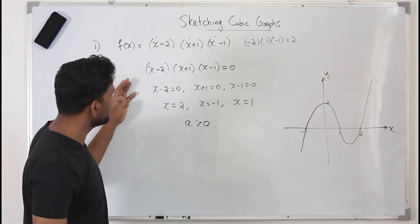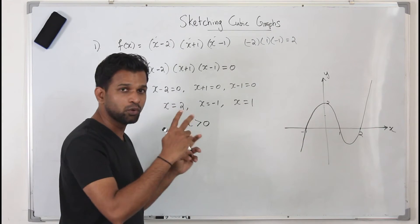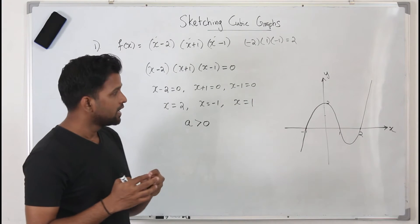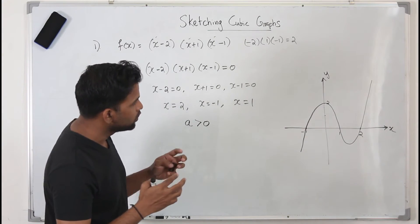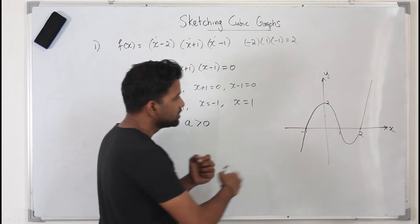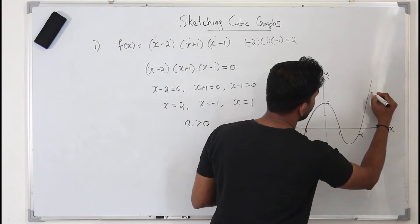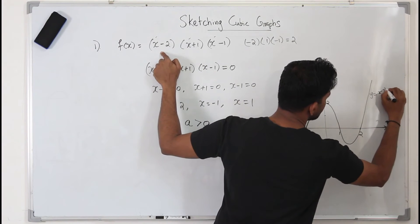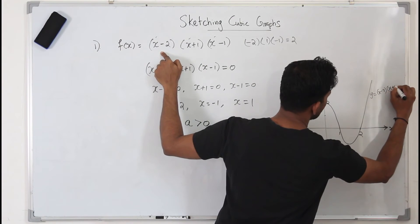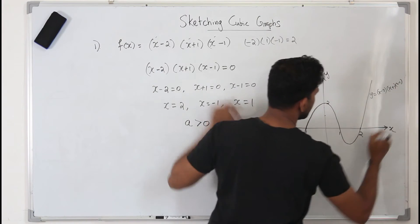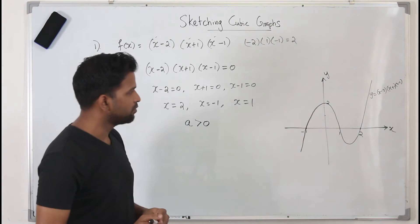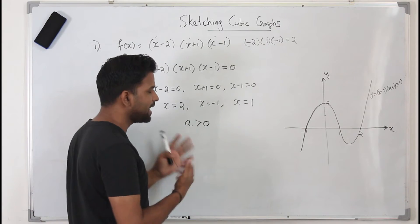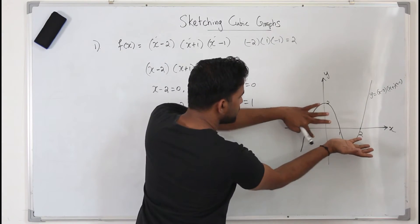When sketching two graphs on the same xy-plane, always label each graph. Our graph is labeled y = (x−2)(x+1)(x−1). Since a is positive the graph has that upward form; if a were negative, the graph would be the inverted version of this.